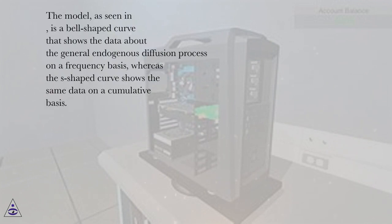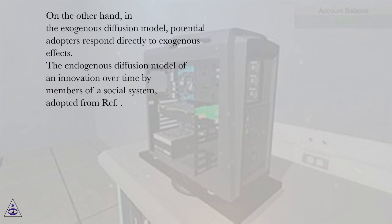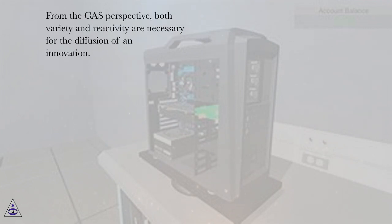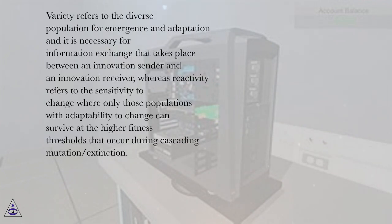The model is a bell-shaped curve showing data about the general endogenous diffusion process on a frequency basis, whereas the S-shaped curve shows the same data on a cumulative basis. In the exogenous diffusion model, potential adopters respond directly to exogenous effects. From the CAS perspective, both variety and reactivity are necessary for the diffusion of an innovation. Variety refers to the diverse population for emergence and adaptation and is necessary for information exchange between an innovation sender and an innovation receiver, whereas reactivity refers to sensitivity to change, where only those populations with adaptability to change can survive at the higher fitness thresholds that occur during cascading mutation or extinction.